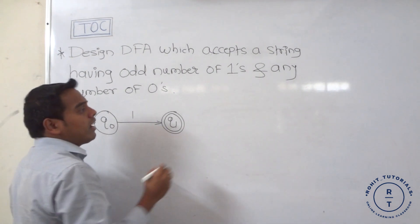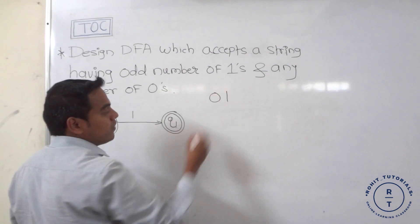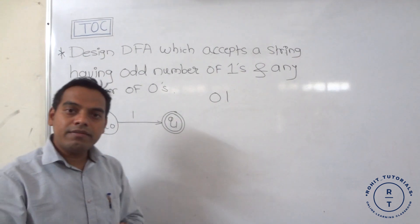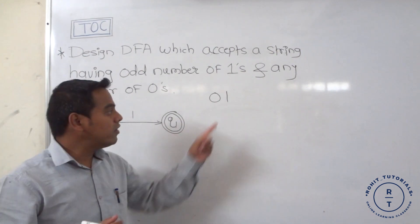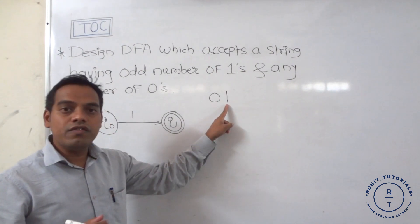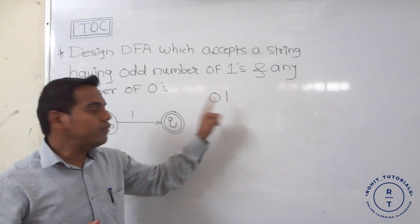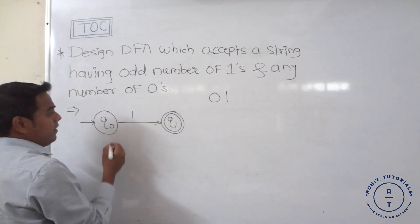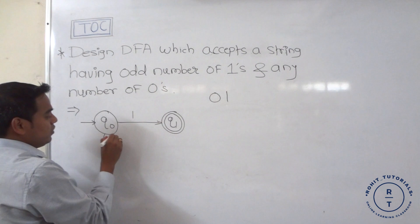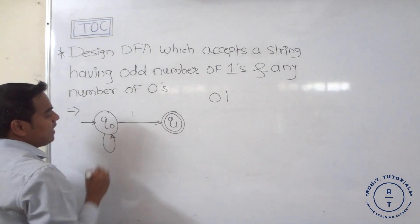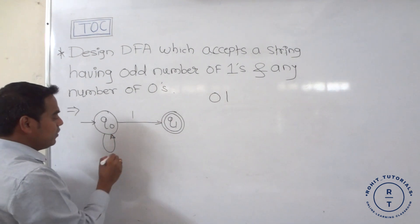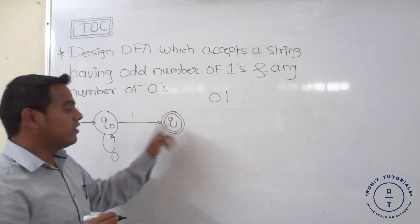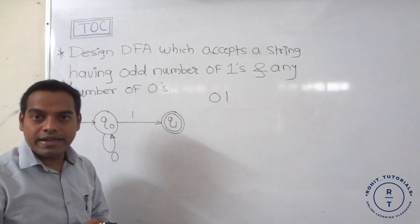Now consider the string '01' — is this accepted by the finite automata? Yes, because it consists of an odd number of ones. So when '0' appears at state q0, we remain at q0 (self-loop on 0), and then on '1' it goes to the final state q1.